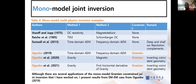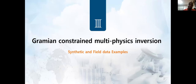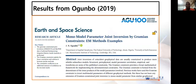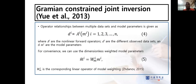Although there are several applications of the monomodal gramian constraint joint inversion that I have worked on, I will present just one case — the Ogunbo 2019 result — within our limited time. That leads me to the next item, which is the gramian-constrained multi-physics inversion. I'll give a synthetic example and thereafter the field data examples. This is the publication in Earth and Space Science — the AGU journal.